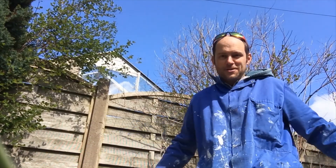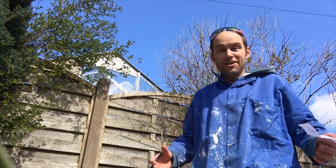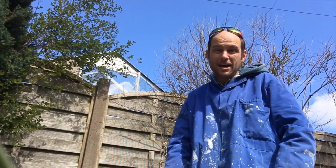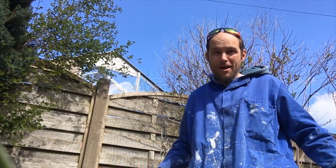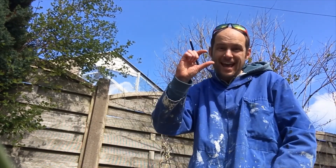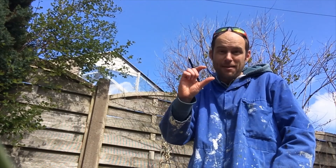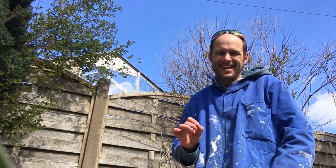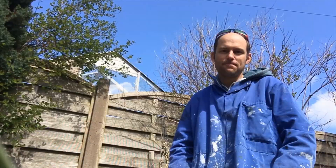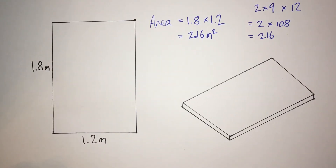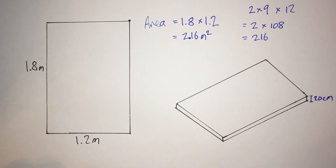Now that I have the area of this space, I can work out the volume of the concrete I need by multiplying the area by the depth. The thickness or depth needs to be 20 centimeters to get a good solid foundation. My calculations so far have all been in meters, so I'm going to change this into meters — 0.2 meters.